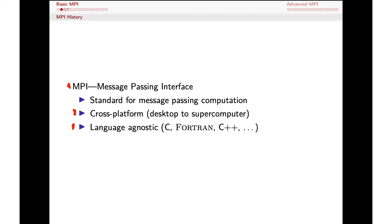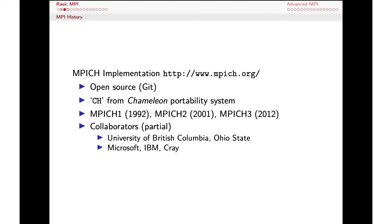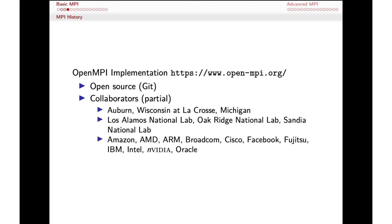There are a couple of different implementations of MPI. One is called MPICH. This is an open source project, and the CH at the end is actually from the Chameleon system, which was a wrapper or layer beneath MPI that allowed you to port it to different machines. There have been various versions, with collaborators from both industry and academia. Another implementation is called OpenMPI. Again, it's open source, and there are a lot of collaborators, including some overlap with MPICH.